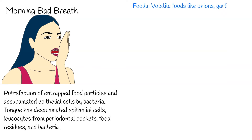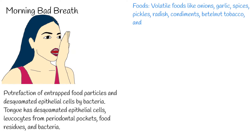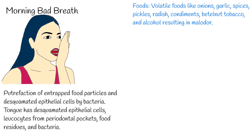Some food consumption causes halitosis. Volatile foods like onions, garlic, spices, pickles, radish, condiments, betel nut, tobacco, and alcohol result in malodour. Garlic and onions have a high sulfur concentration in their composition, which on degradation through the gastrointestinal tract emits a characteristic odour that lasts for hours after consumption.